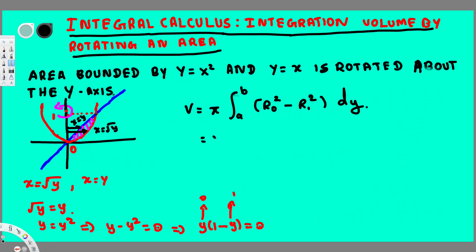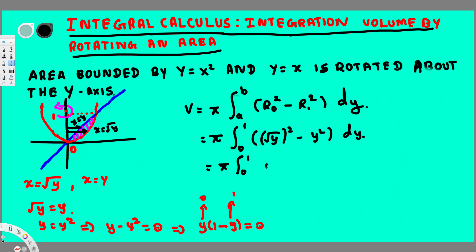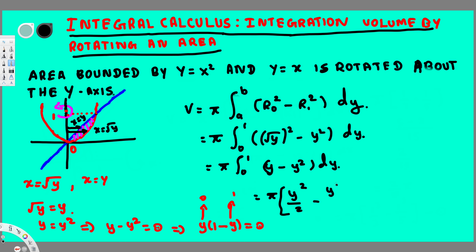Now we have all the information — we just do the integration. This is going to be π times the integral from 0 to 1 of (√y)² minus y² dy, which simplifies to π times the integral from 0 to 1 of (y − y²) dy. Integrating gives y²/2 minus y³/3, evaluated from 0 to 1.